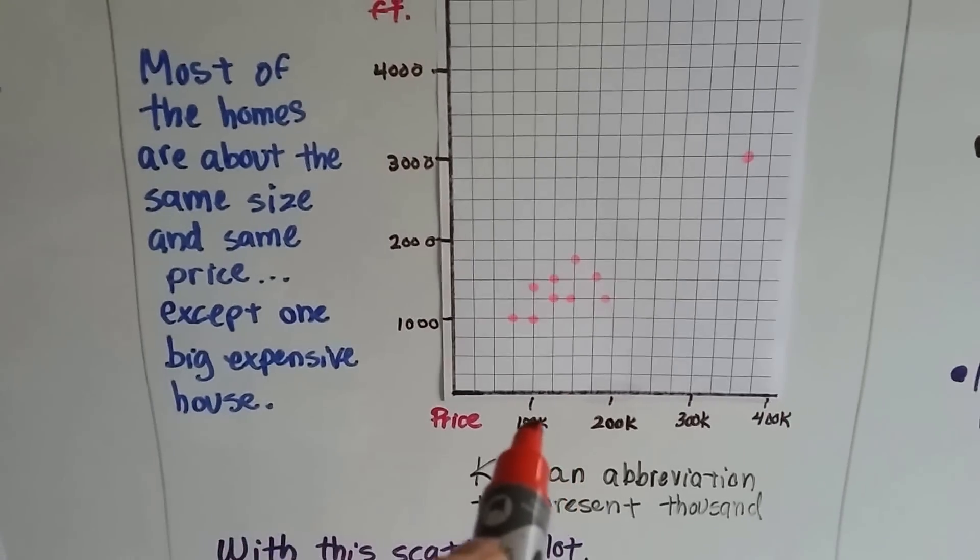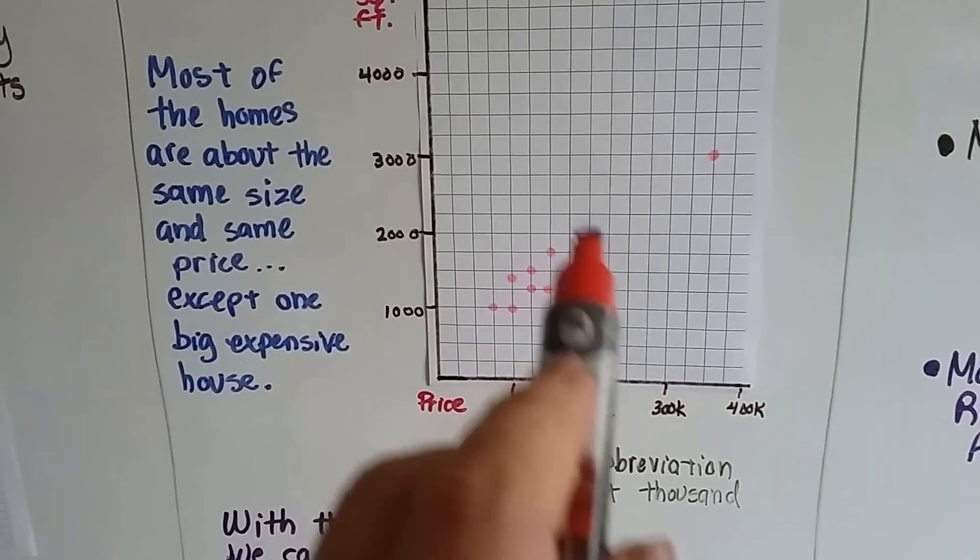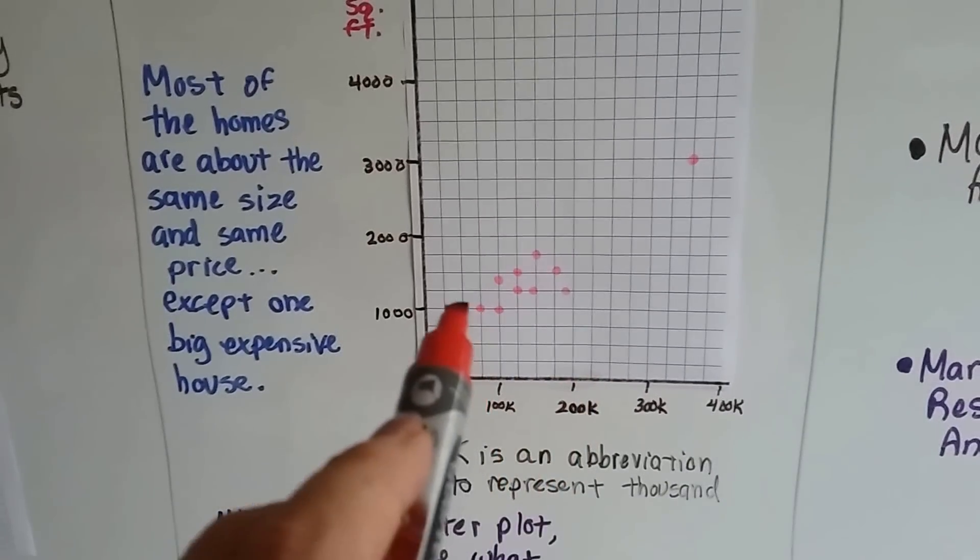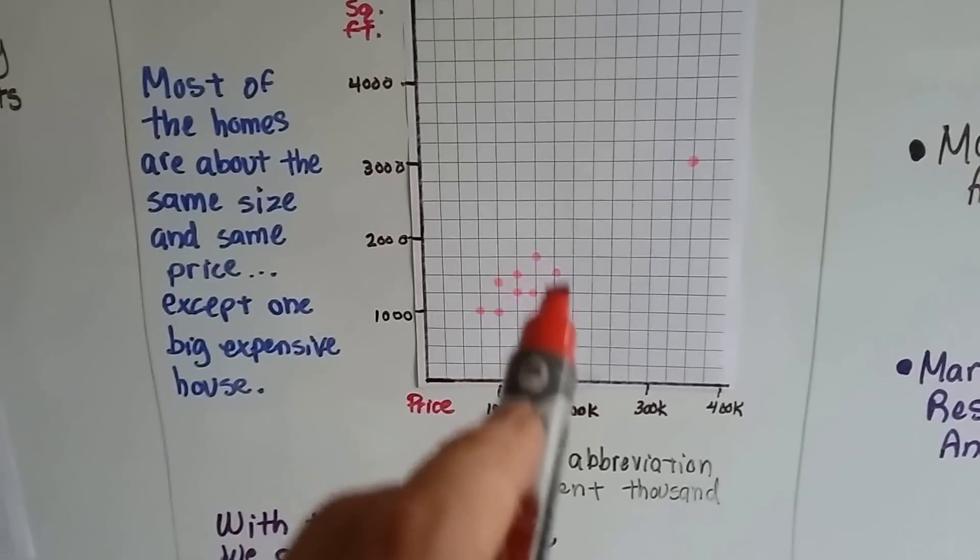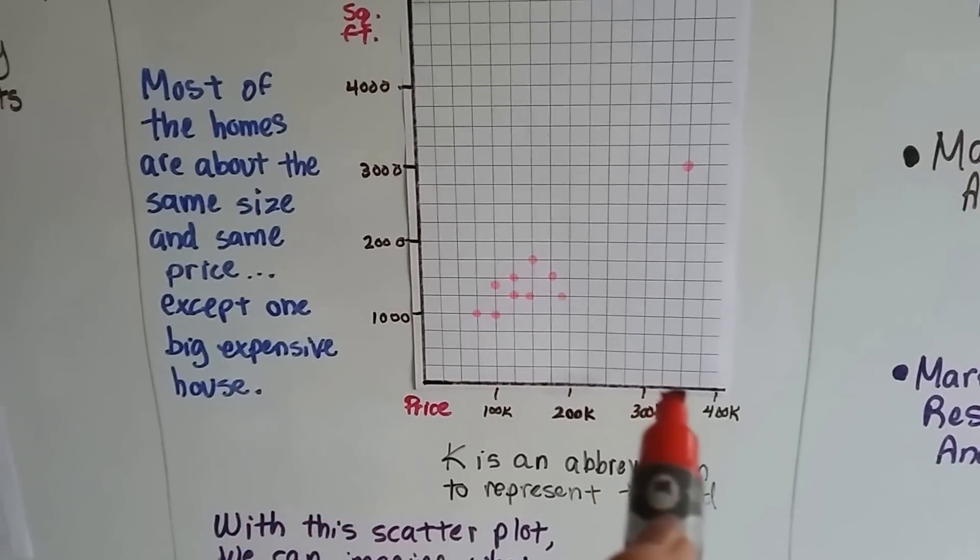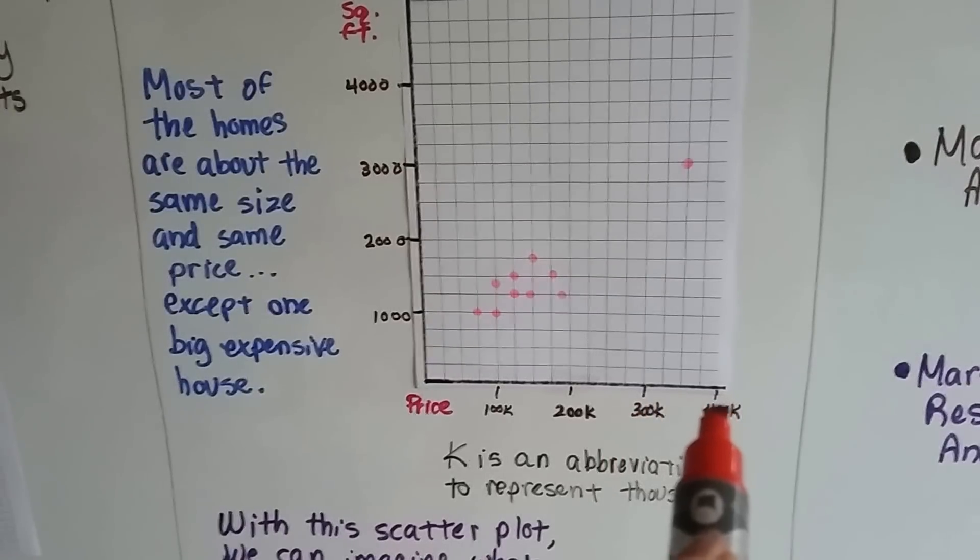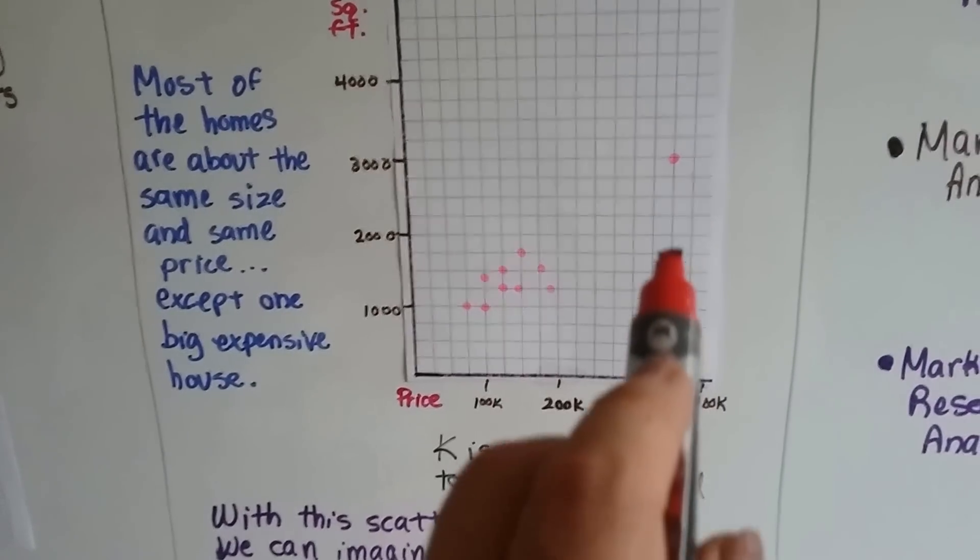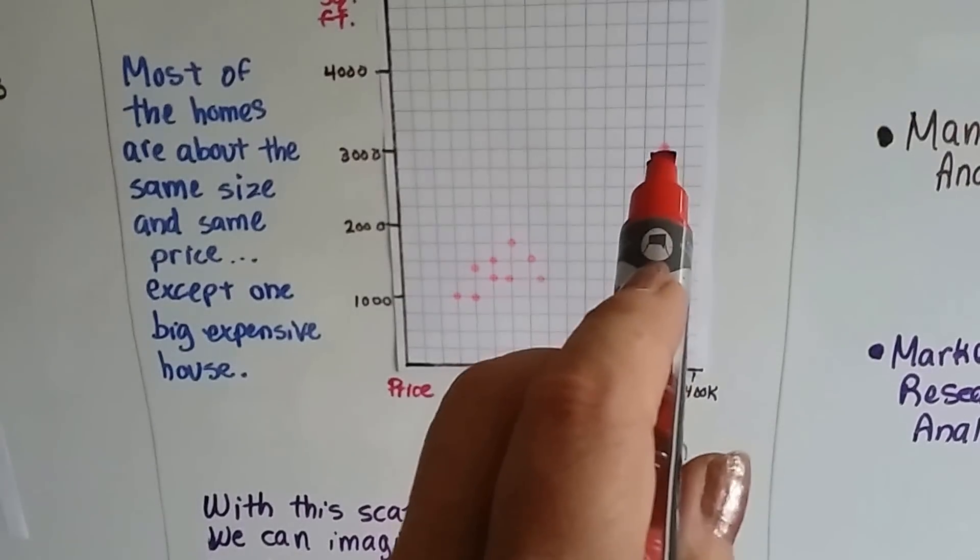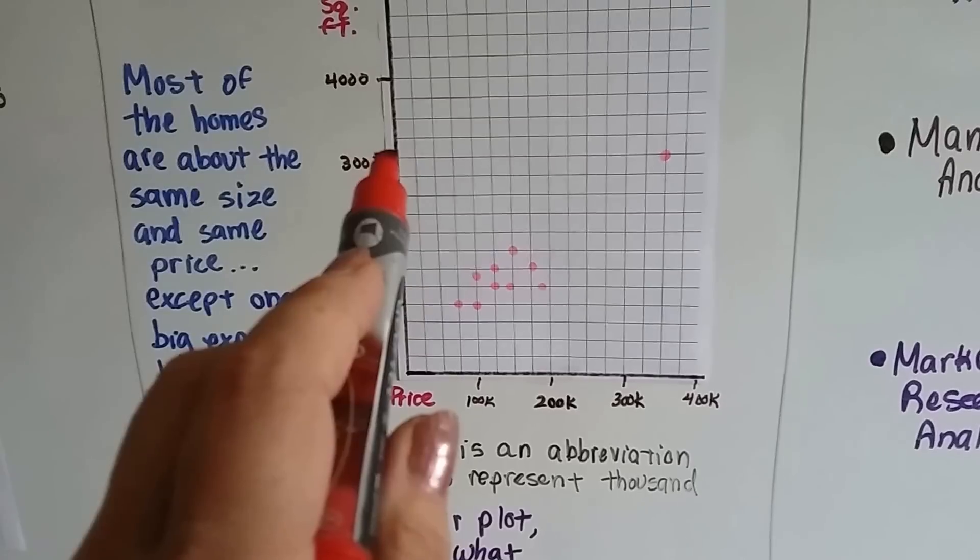And by looking at this, we can see that most of the houses have between 1,000 and 2,000 square feet, and they're around $100,000 to just under $200,000 for the house. And then we can look over here and here's 300 and 400. So that right in the middle would be 350. This house is $350,000 and it's got 3,000 square feet.